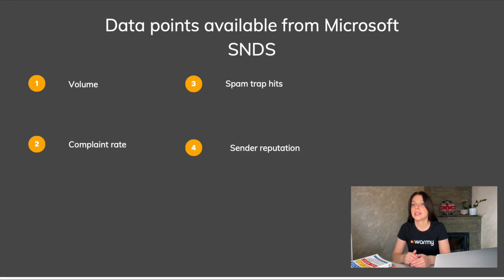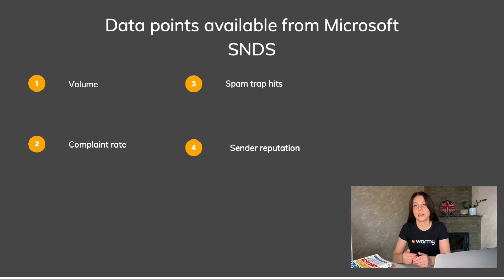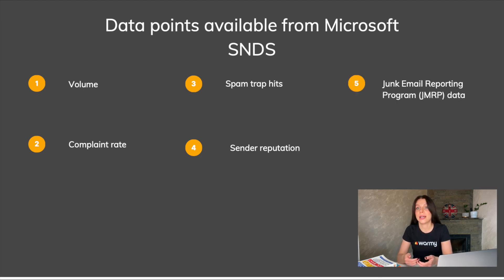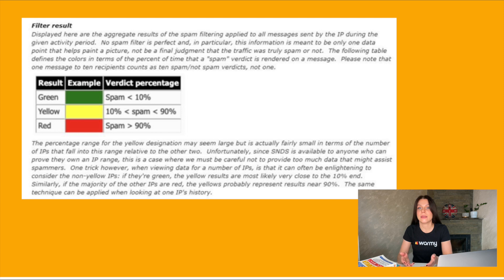Sender reputation: Microsoft SNDS provides a sender reputation score based on a combination of the above data points as well as other factors such as email authentication and content analysis. A high sender reputation score can indicate good sending practices and help improve email deliverability, while a low score can indicate potential issues that need to be addressed. Junk email reporting program data: this data provides email senders with reports on messages that were marked as junk by Outlook users, helping identify potential issues with email content or sending practices.